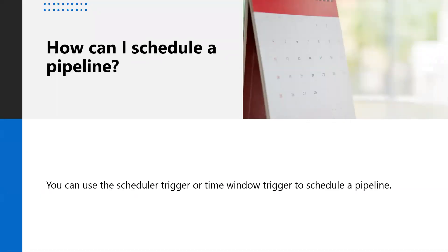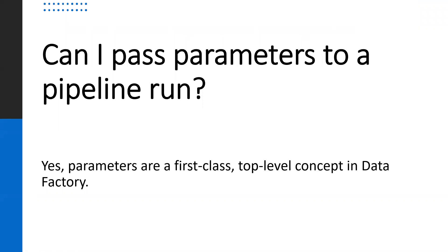How can I schedule a pipeline? We can use the scheduler trigger or time window trigger to schedule a pipeline. Can I pass parameters to a pipeline run? Yes — parameters are a first-class top-level concept in Data Factory. Parameters are key-value pairs in a read-only configuration. We define parameters in a pipeline and pass the arguments for the defined parameters during execution from a run context, which is created by a trigger or from a pipeline executed manually. Activities within the pipeline consume the parameter values.